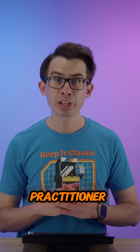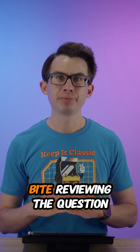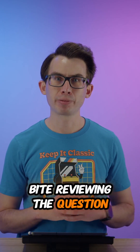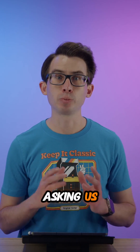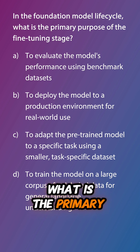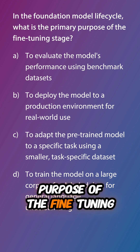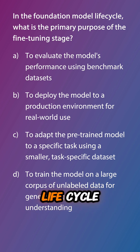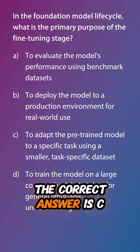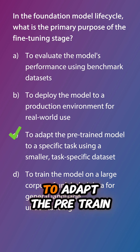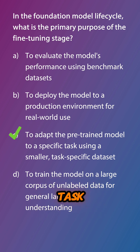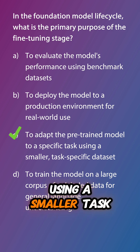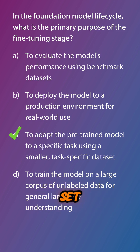Welcome back to another AI Practitioner Exam Byte, reviewing the question from the previous episode asking us what is the primary purpose of the fine-tuning stage in the foundation model life cycle. The correct answer is C: to adapt the pre-trained model to a specific task using a smaller task-specific data set.